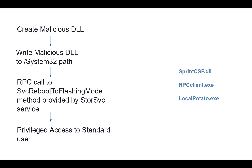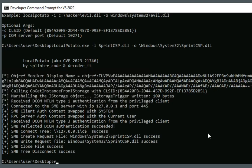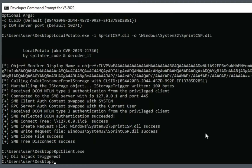The next step is to trigger the malicious DLL. We have written it to System32 — now we need to run rpc_client.exe, which will trigger our sprint_csp.dll via the StoreSvc RPC call. Just type rpc_client.exe and press Enter. A prompt will appear saying 'DLL hijack triggered'.